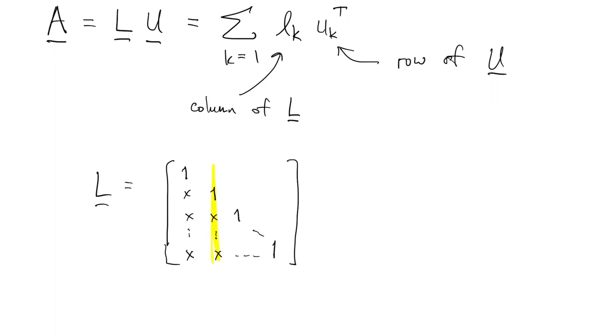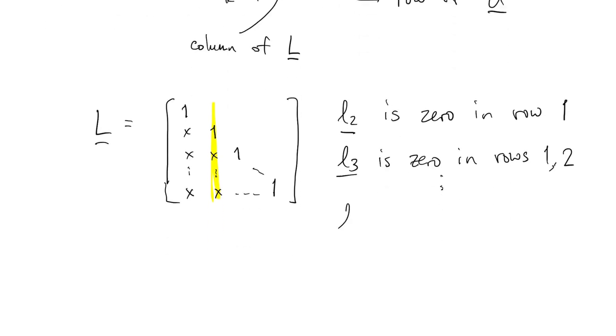So if we look at a column like L2, the second column of L, well, it's zero in row one. If you look at the third column, it's zero in rows one and two. In general, the kth column is zero in rows one to k minus one.